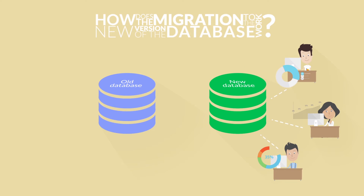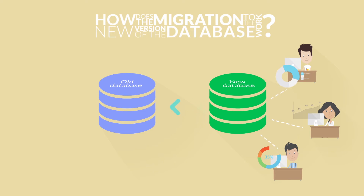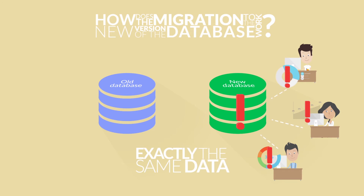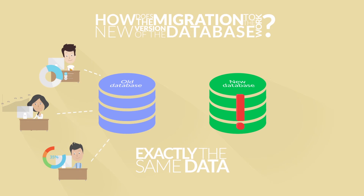At the time of switching off the application, in addition to changes of the database working with the application, you can also change the replication's direction and replicate all the data entered into the new database back to the old one. This gives you the opportunity to revert back to the old database if there are any problems with the new one, as the old database contains exactly the same data as the new one. The plan to return to the old database may be used even if the new database receives a large amount of data.